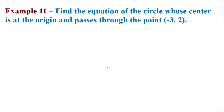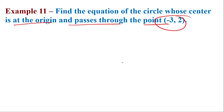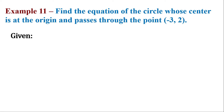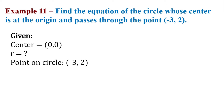For example number 11, find the equation of the circle whose center is at the origin and passes through the point negative 3 comma 2. Let's start answering this question by writing the given. The center is at the origin. We don't know the radius, but we know that the circle will pass through point negative 3 comma 2.